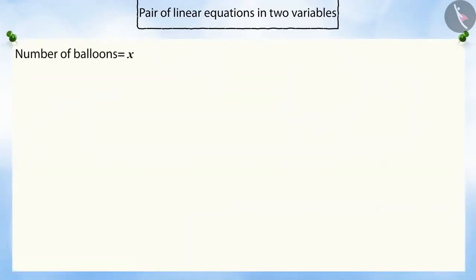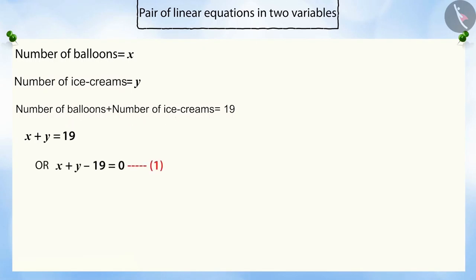Let x be the number of balloons that Rahul bought. And y be the number of ice creams he bought. And Rahul also knows that the total number of both items is 19. With this information, we can form the first equation which will be x plus y equals 19, which can also be written as x plus y minus 19 is equal to 0.